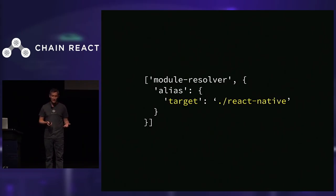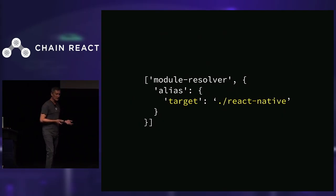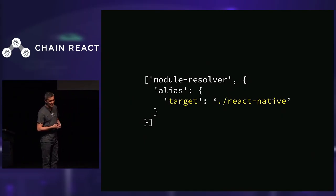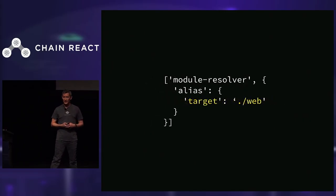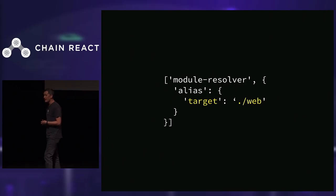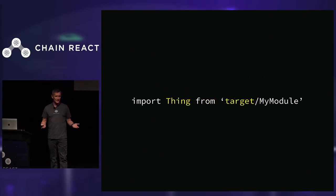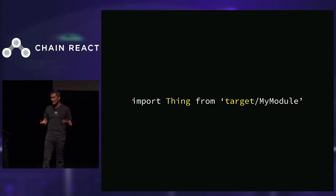Now let's talk about how we're configuring Babel to let these folders work together. Here's an example of our .babelrc file for our React Native target — we've defined a target alias that points at our React Native folder. For the web, we do the exact same thing: a target alias that points at our web folder. So our shared code can import a thing from a target, and depending on what target you're compiling for, you'll get the right thing.